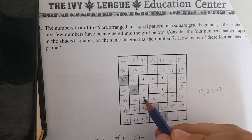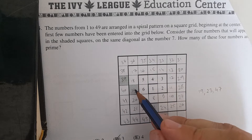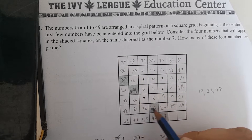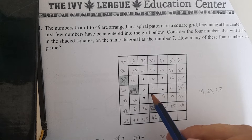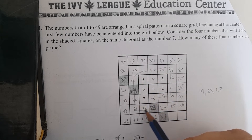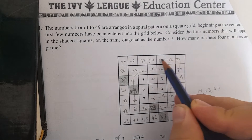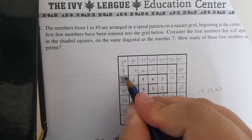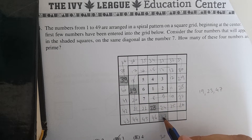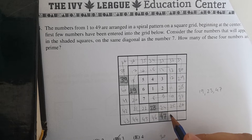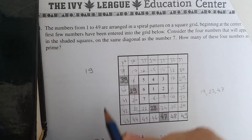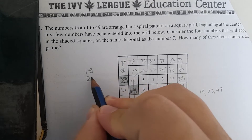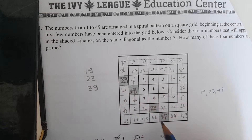We will continue: 7, 8, 9, 10, 11, 12, and so on. The number in the next shaded square on the diagonal is 19. Continuing the spiral, 23 will come in the next square. Then 39, and then 47. So the four numbers on that diagonal are 19, 23, 39, and 47.